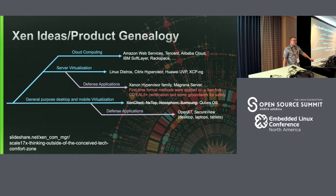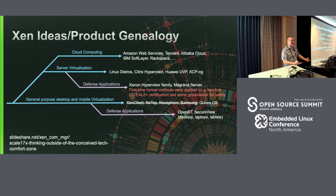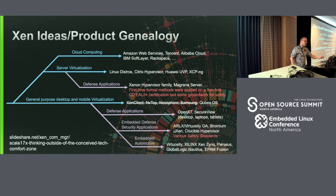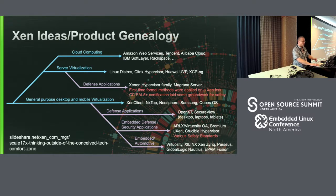Then we had various attempts to bring Xen to the desktop as well as mobile virtualization. Linux desktop with Xen never really cracked that. However, Qubes OS as a security-conscious operating system is still around and very successful, as well as OpenXT and SecureView, which are basically defense applications. From that baseline, the project eventually started branching out into more generic embedded use cases as well as automotive.